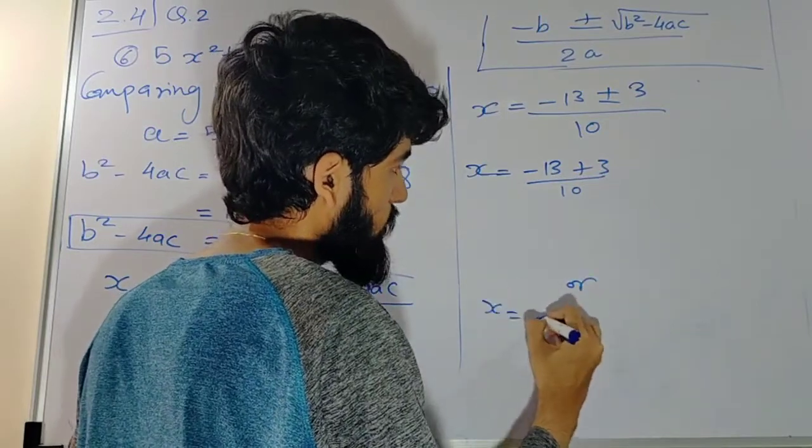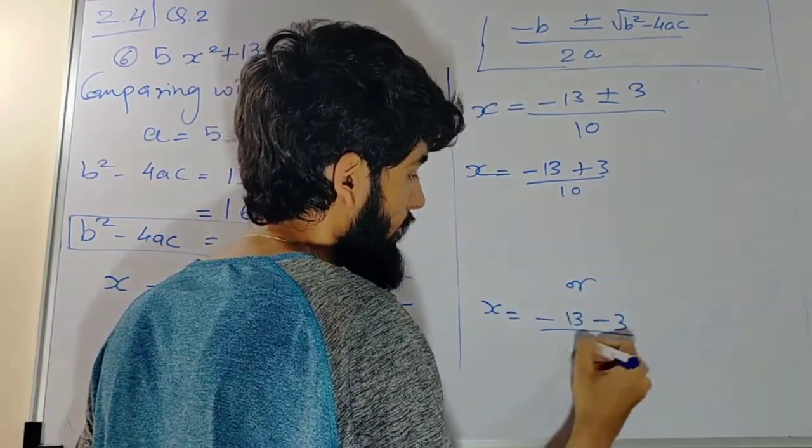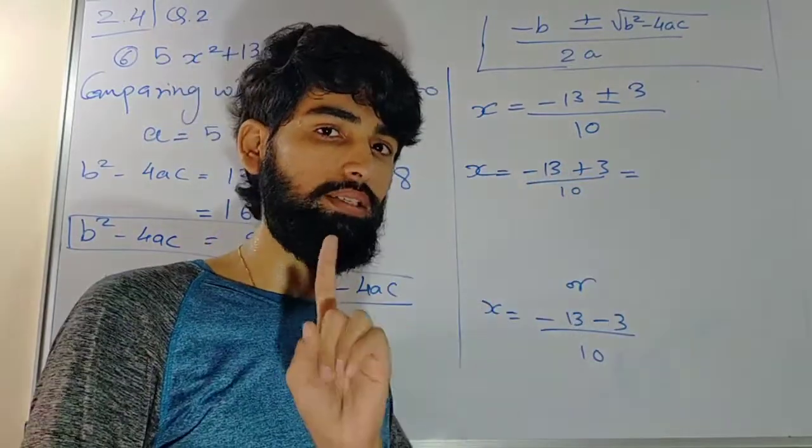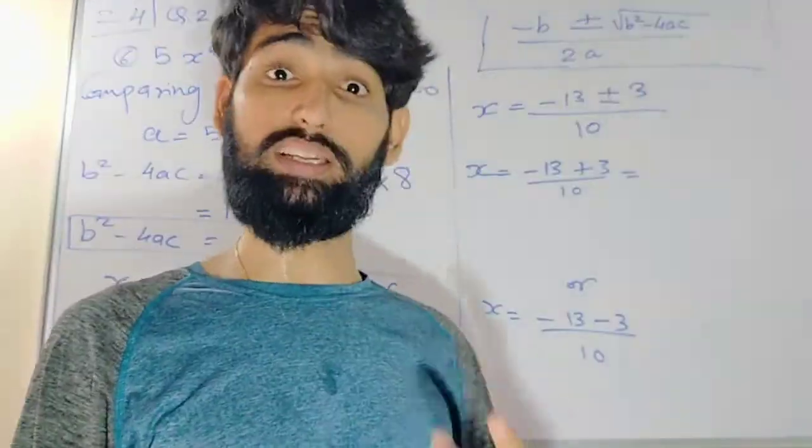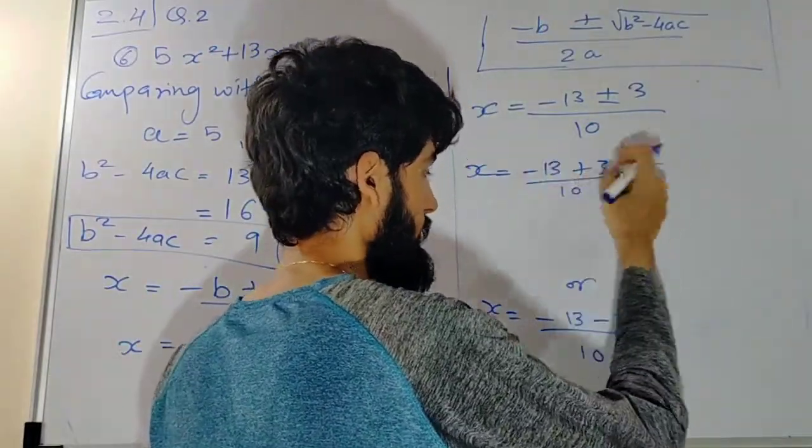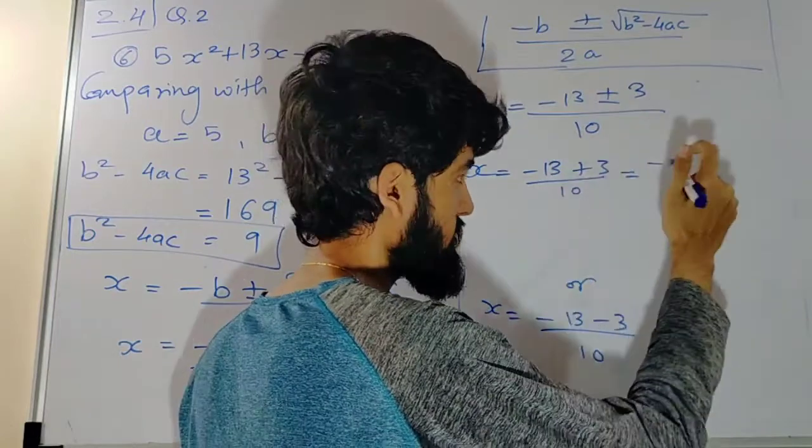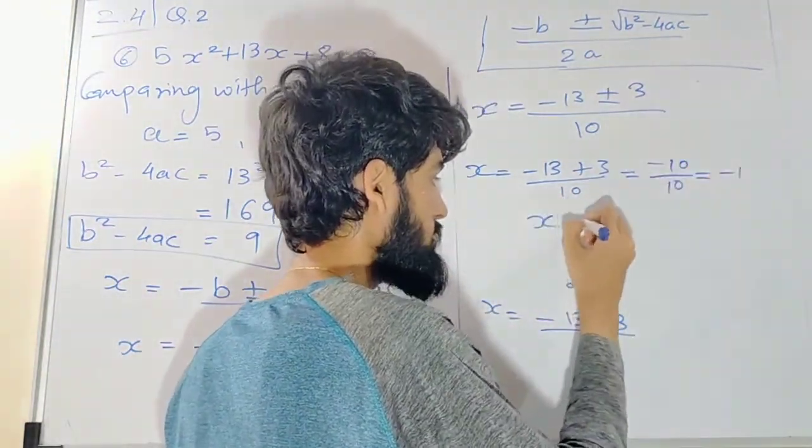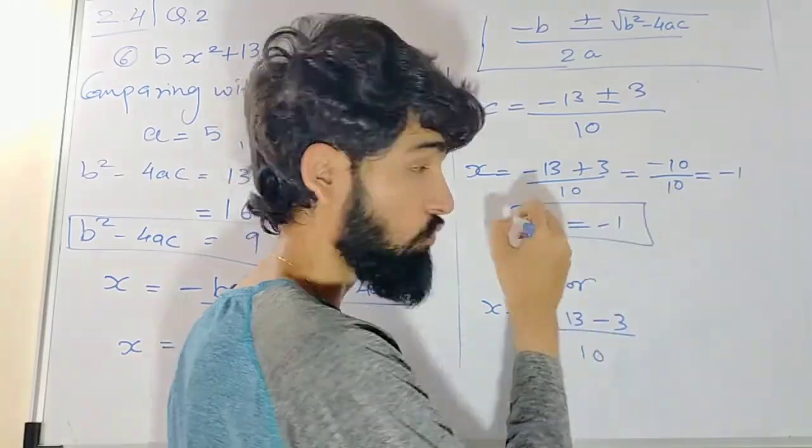Or your x is equal to minus 13 minus 3 by 10. This is minus plus minus, sign of greater number. I mean minus. Sign of 13. 13 minus 3 is 10, 10 by 10. Minus 1 is the answer. So x is equal to minus 1 is one of the roots.